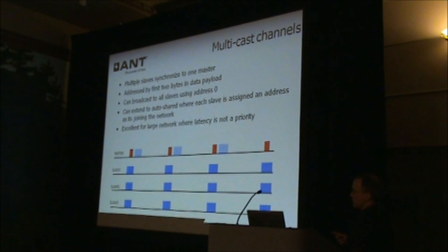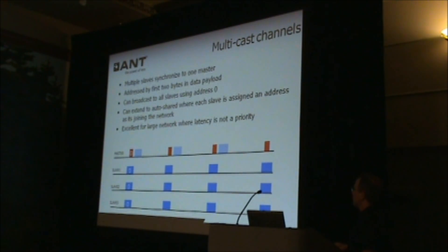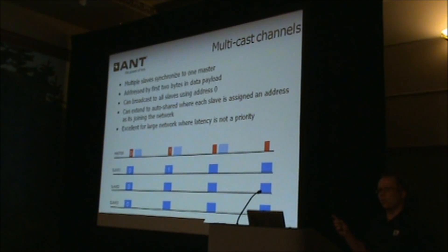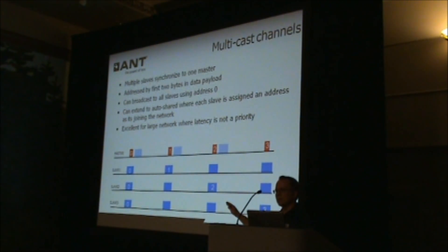This allows you to specify a particular slave that you want to communicate with exclusively in this shared channel. Address zero is reserved to talk to everybody, so you can broadcast a message to every shared slave on the network. And then you can specify a specific address if you need to. So your master can address slave one, and only slave one will get that message on that channel period. Over each channel period, you can send data to a specific slave device by indicating its address.